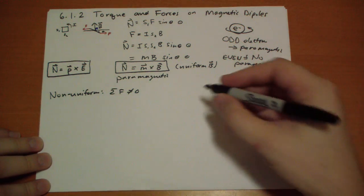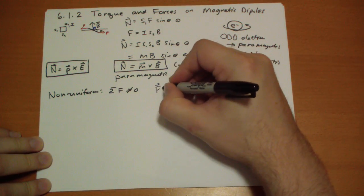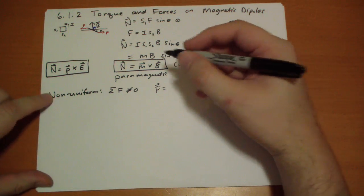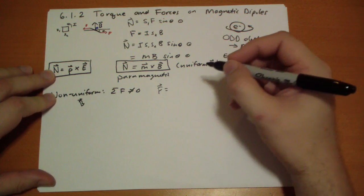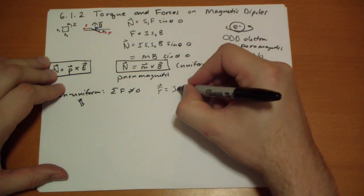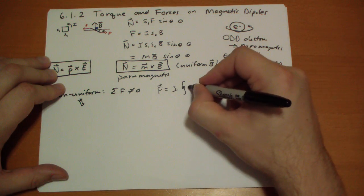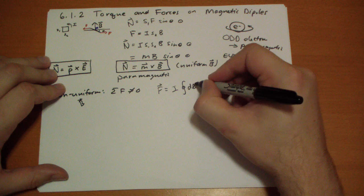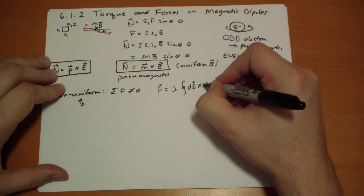You can calculate the force in non-uniform magnetic fields as the current times the closed-loop integral of the DL elements crossed with B.